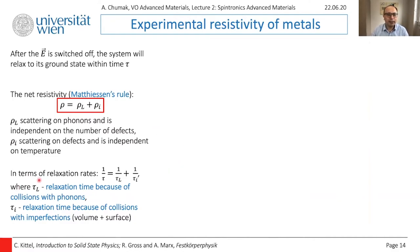You can also rewrite this same formula in terms of relaxation rate. Relaxation rate means one over relaxation time. You write that relaxation rate in general is defined by the sum of inverted relaxation times. Tau L is relaxation time because of collisions with phonons, and tau I is relaxation time because of collisions with imperfections.